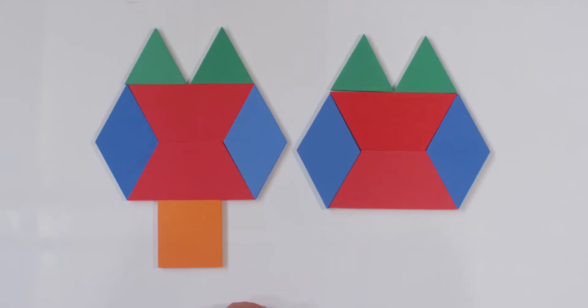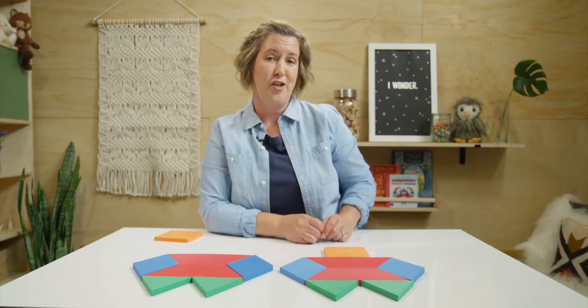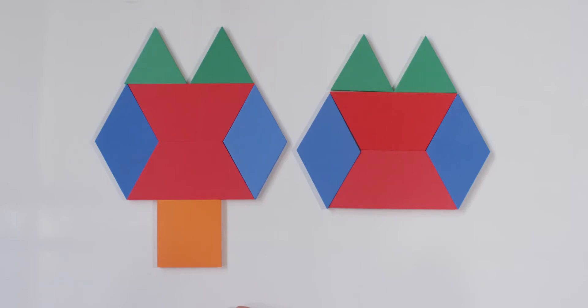Which shape did I change so that now my pictures are not identical? If you said the shape on the left, you're right. And if you said I added an orange square, you're right.